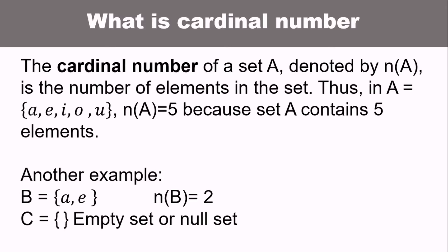Another example: set B with elements a and e, so 2 is the cardinal number. For set C, there's nothing, so that is what we called empty set or null set. When there's no content, that is what we called empty set or null set. It's different from zero.